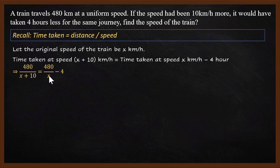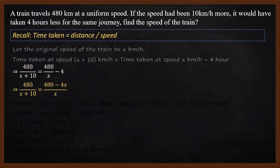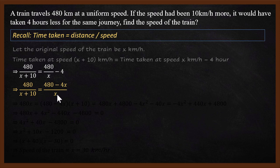This can be simplified. For the right-hand side: 480 divided by x minus 4 simplifies to (480 minus 4x) divided by x. To eliminate the denominators, we multiply the whole equation by x times (x plus 10).